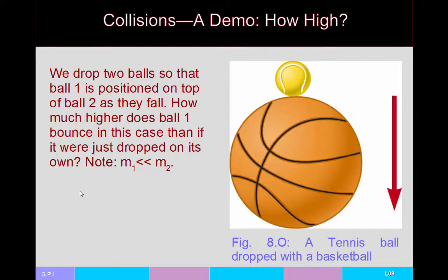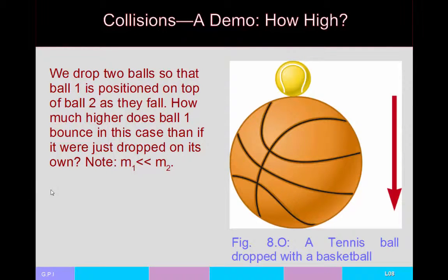Specifically, I'm going to start by making reference to a demo which I have done before in class and which I have on a different video. In this video, we basically drop two balls so that one ball is positioned directly on top of the other ball. The question is, how much higher does this little ball — the one that's on top — bounce than it would have if we just dropped it, assuming that no energy is lost from the system? You can actually do the demo yourself at home if you have a basketball and a racquetball or a tennis ball, or you can go watch one of my videos or look up other videos online. In any case, the answer is that the ball will bounce about nine times higher than it would have had it just been dropped.